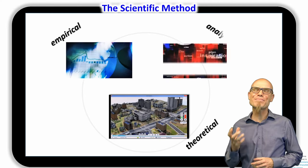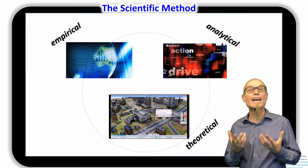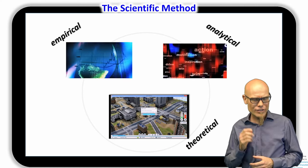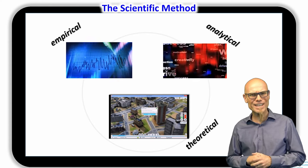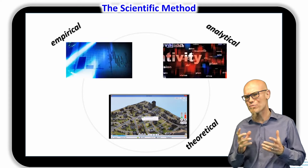And of course, what's between the empirical and the theoretical is the analytical. Here we will analyze social networks and get help from artificial intelligence and machine learning in order to make sense of things.